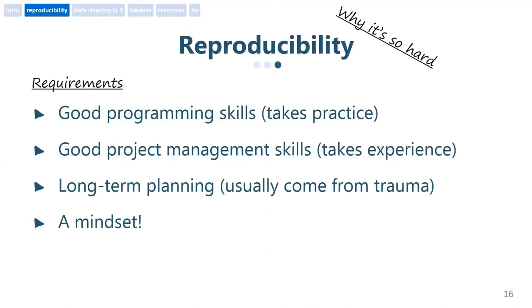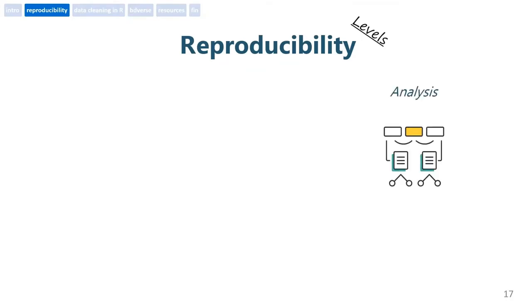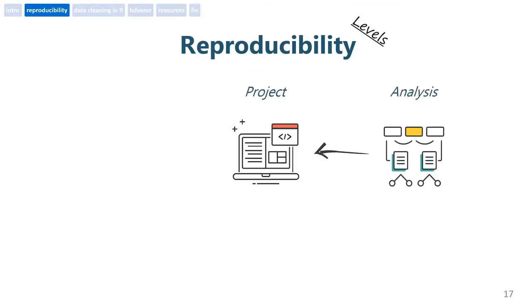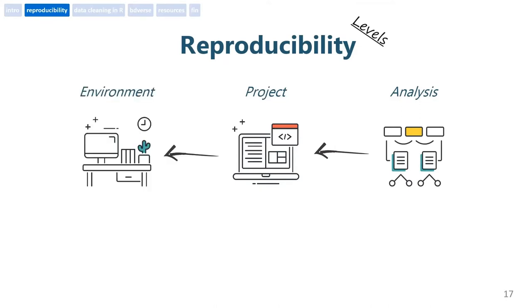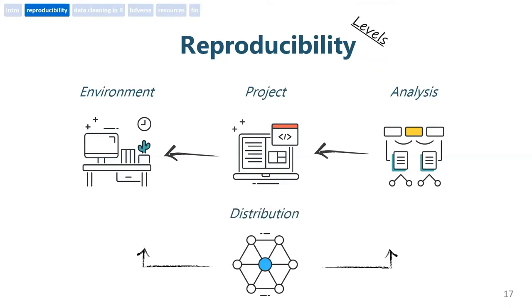But above all, maybe this is the good news — it's a mindset. Reproducibility operates on all levels: starting with the analysis level, then moving up to the project level, then up to the entire environment where our project inhabits, and then we'll see how we can distribute the entire thing. So let's get inside each level, with the usage of R as our focal point.